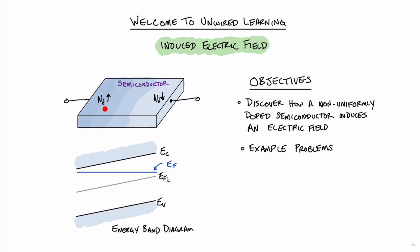You might recall that when we have a donor doping concentration that is higher, that means the Fermi level will move closer to the conduction band. And when we have a doping level that is lower, that Fermi level will move farther away from the conduction band. As you can see in the picture below, that's exactly what we're picturing. On the left, we're showing that the Fermi level is very close to the conduction band, but on the right it is much further away, as indicated by the lower doping concentration. Therefore, this picture is representative of the semiconductor's band diagram when we have a graded distribution.